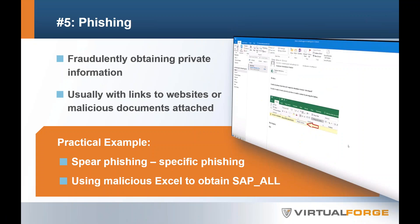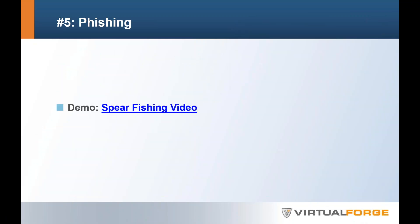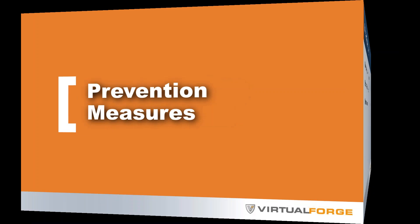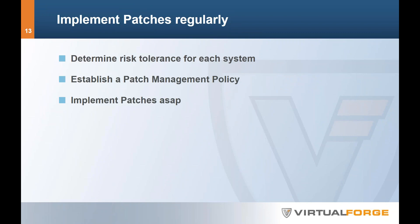Now let's look at what can be done to prevent these attacks. First: patches. We recommend establishing a patch management policy. With SAP systems, it's sometimes hard to implement patches immediately after release — systems need to be restarted, processes followed, and patch dependencies addressed. The first step is to determine a risk tolerance for each system. A productive system has a lower risk tolerance than a sandbox system with no sensitive data.